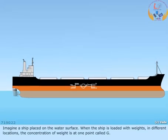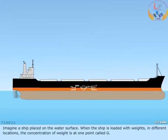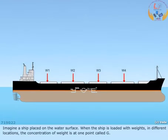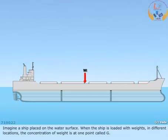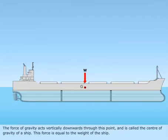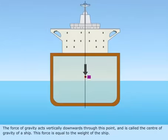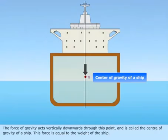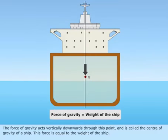Imagine a ship placed on the water surface. When the ship is loaded with weights in different locations, the concentration of weight is at one point called G. The force of gravity acts vertically downwards through this point and is called the center of gravity of a ship. This force is equal to the weight of the ship.